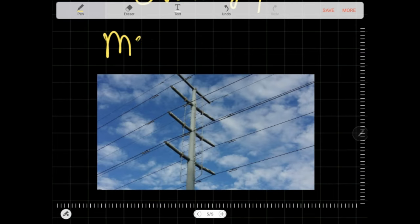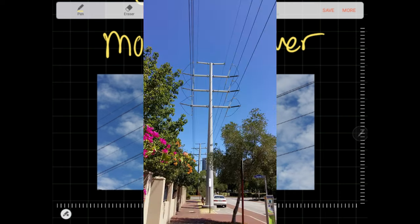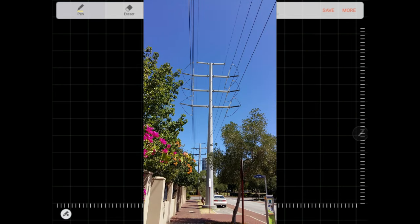This is a monopole tower. It has only one pole. They take up less space but are more expensive to implement. They are used in areas where space is limited.